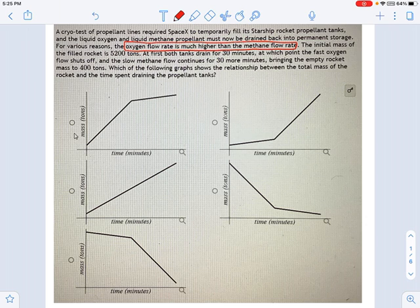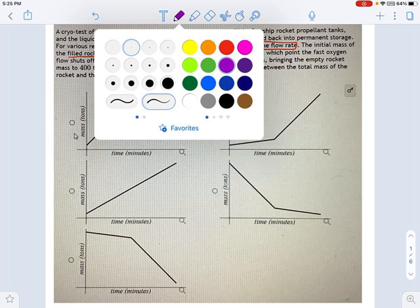And here we go, the initial mass of the rocket is 5,200 tons. Here's something else important that happens. At first, both tanks drain for 30 minutes. Then the oxygen shuts off.